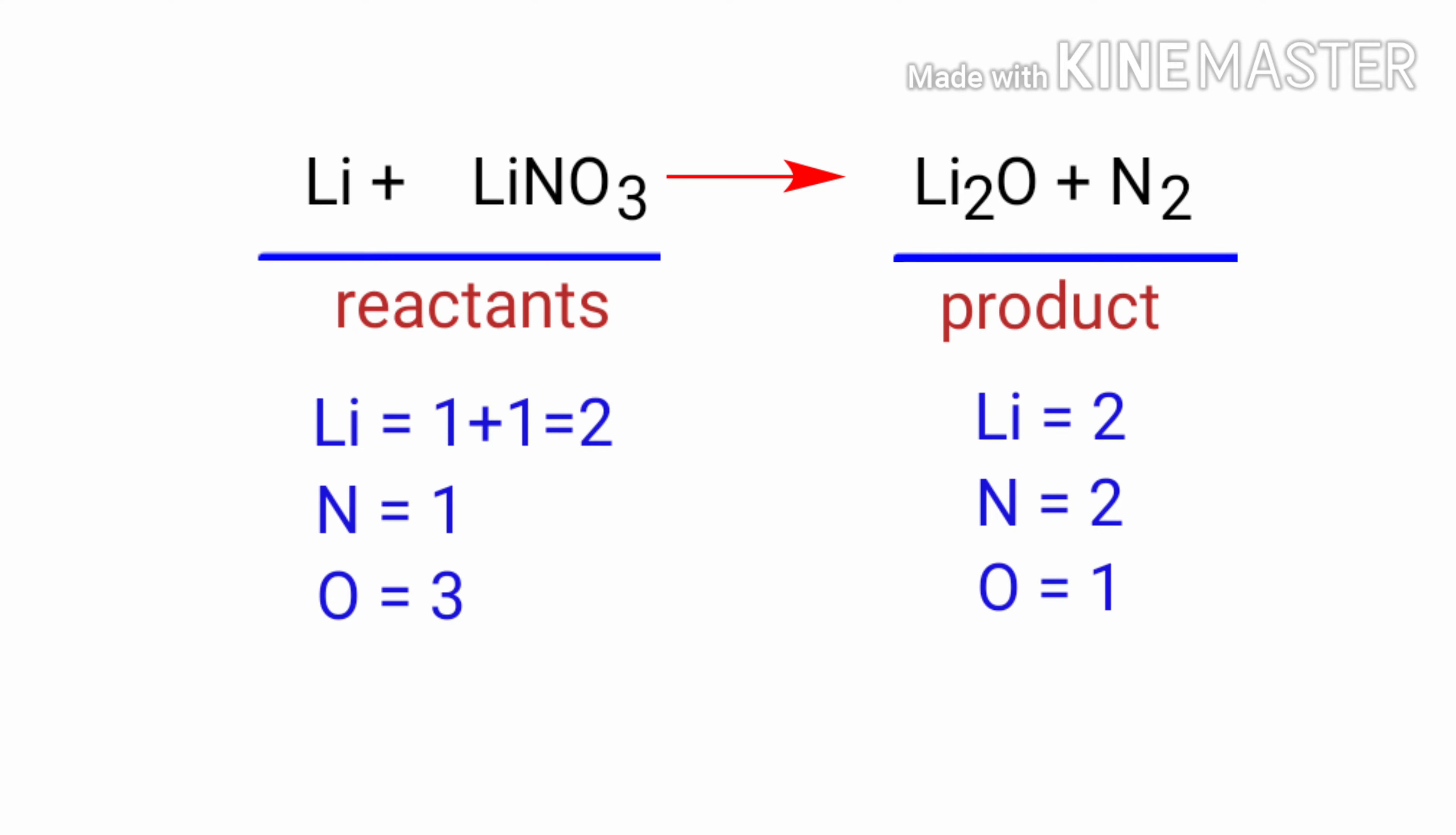To balance the chemical equation, we need to make use of coefficients. A coefficient is a number that we place in front of a chemical formula.